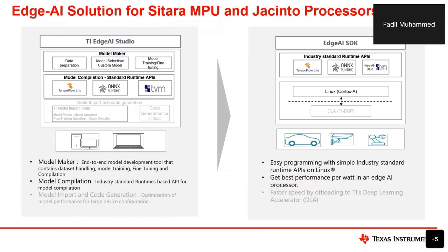All these applications can be enabled using TI's complete and easy-to-use software solution, which is scalable across both the Jacinto series as well as the Sitara MPU Cortex-A series of chipsets. TI's software comprises two parts: on the left is model preparation — consisting of model compilation, fine tuning, and model selection — which needs to be carried out offline on the host machine. On the right side is model inference, which is carried out on the target devices.